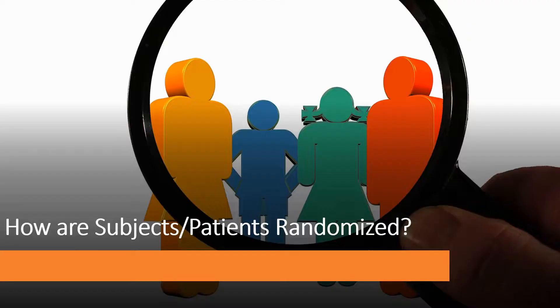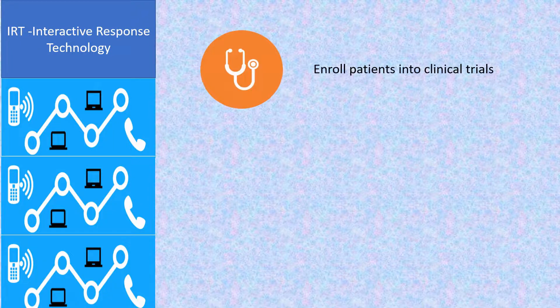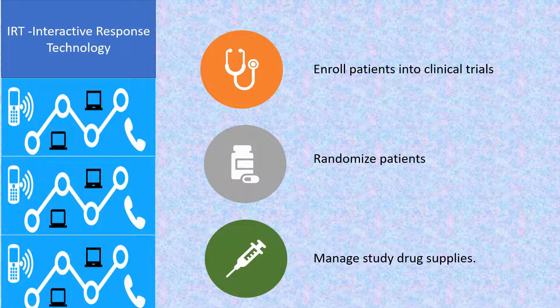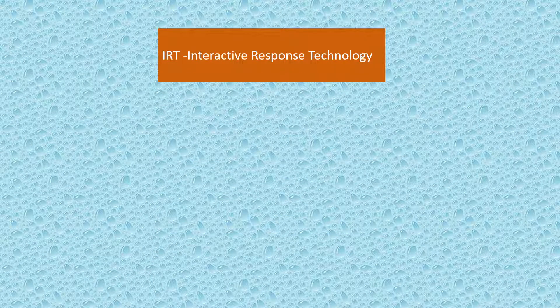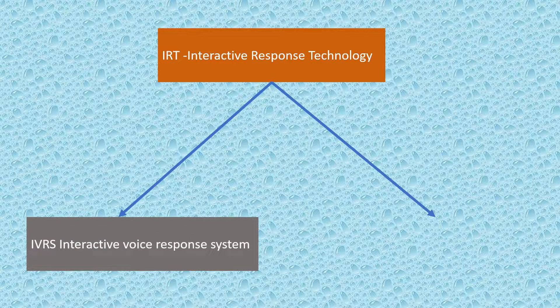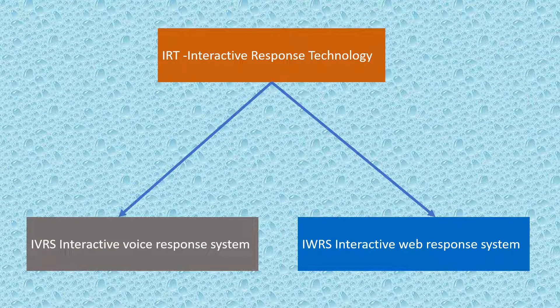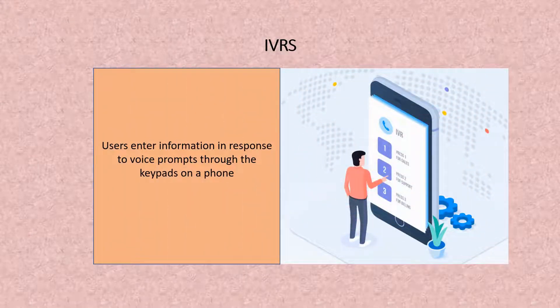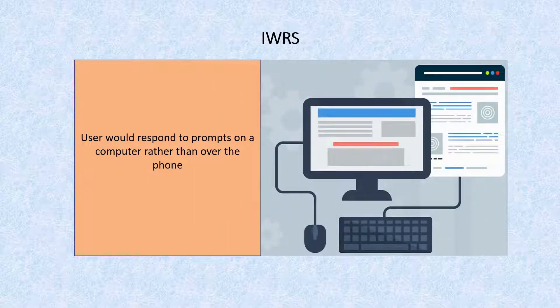How are subjects or patients randomized? Interactive response technology, or IRT, is currently in use to enroll patients into clinical trials, randomize patients, and manage study drug supplies. There are two types of IRT: the interactive voice response system (IVRS) and the interactive web response system (IWRS). In IVRS, users enter information in response to voice prompts through a keypad on a phone, whereas in IWRS, the user responds to prompts on a computer rather than over the phone.